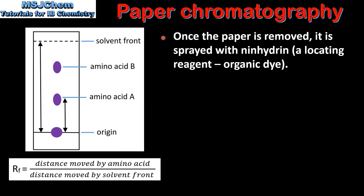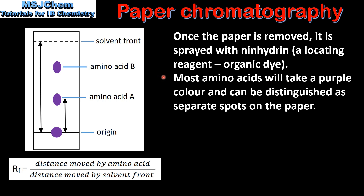Once the paper is removed it is sprayed with ninhydrin. Ninhydrin is a locating agent which is an organic dye. Most amino acids will take a purple color and can be distinguished as separate spots on the paper — as we can see here we have amino acid A and amino acid B.